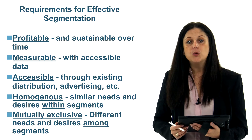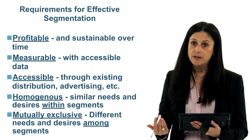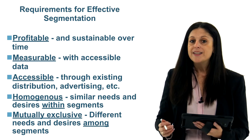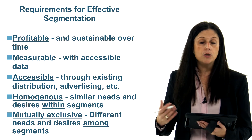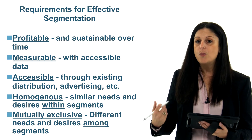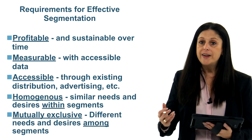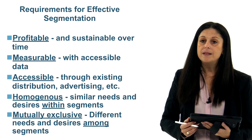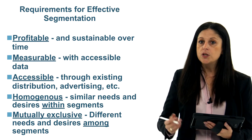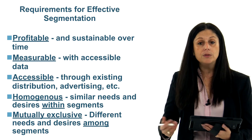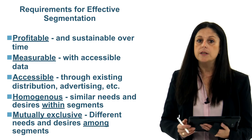We also want to make sure the segment is homogeneous — the people within the segment must have similar needs and buy the product for the same reason. If a segment is not homogeneous and there are multiple needs within it for one product, then we have to re-segment it. Finally, segments must be mutually exclusive — two segments cannot share the same needs. Homogeneity and mutual exclusivity are probably the two most important criteria, followed by accessibility, measurability, and profitability.